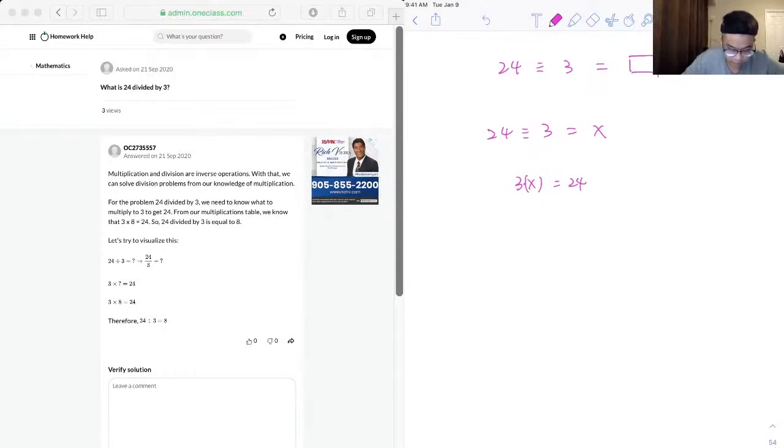And from the multiplication table, we know that 3 times 8 is equal to 24, which means x is equal to 8.